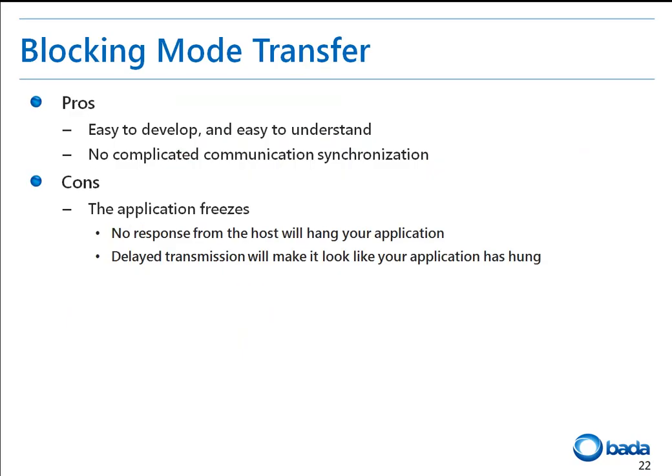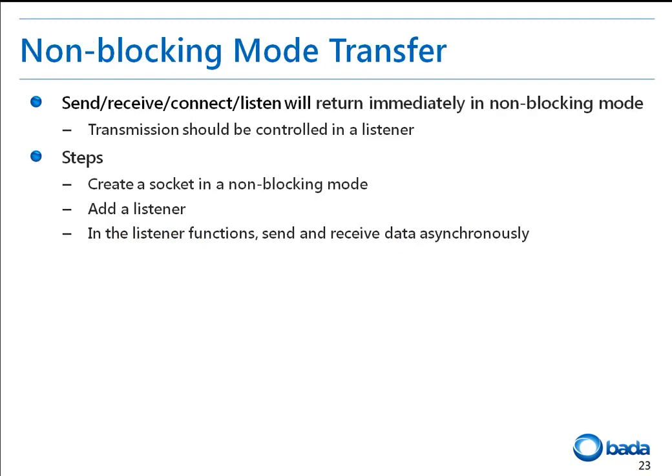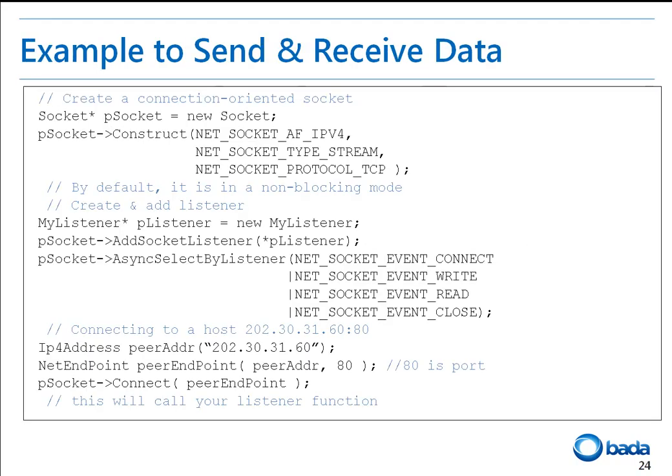Now I am going to explain the pros and cons of blocking mode data transfer. Blocking mode is easy to develop and understand with no complicated communication synchronization, but it can freeze the application when no response is received from the host — a delay in transmission creates a frozen application appearance. In non-blocking mode, receive and send are detected immediately. The first step to implement non-blocking mode transfer is to create a socket in non-blocking mode. After adding a listener, sending and receiving data occurs asynchronously. Here we are coding for sending and receiving data in non-blocking mode.